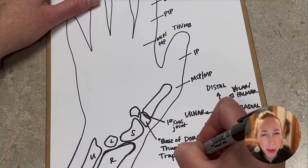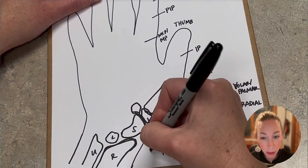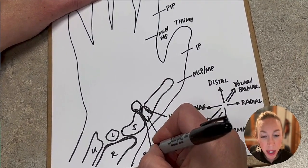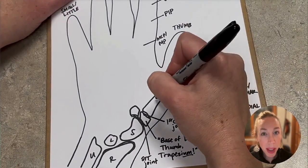The next little bone to trapezium is trapezoid. So this joint here where scaphoid articulates with these two is called the STT joint. That's a common joint where people get arthritis.